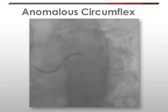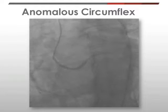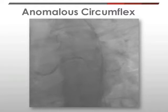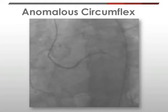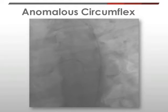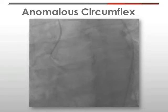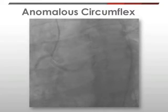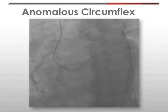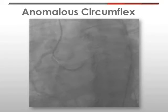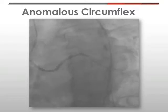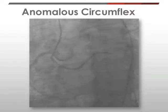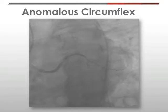Selective angiography of this vessel now demonstrates moderate indeterminate narrowing at its ostium, and moderate to severe focal stenosis in its mid-portion as it traverses the AV groove. Distally, you can see it give rise to a first obtuse marginal, as well as a distal circumflex, which is occluded, and likely chronically.